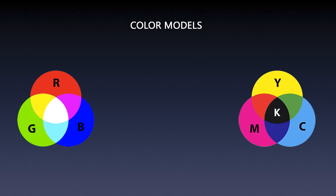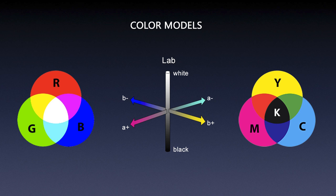So we have the additive color model on the left and the subtractive color model on the right. We also have Lab, which describes human vision shaped like a sphere with three axes: one going from white to black (top to bottom), the A axis representing magenta to green, and the B axis representing yellow to blue.